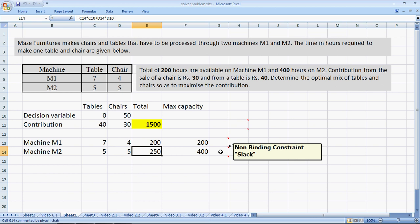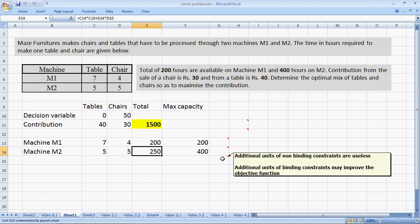Now, if additional capacity of machine M2 was available in the market, it does not make sense for the company to go out and buy this extra capacity because as it is, there is some extra capacity available with the firm. But if additional capacity of machine M1 were to be available, it might make sense for the firm to go out and buy because it's a binding constraint and if we increase this, it might increase the objective function. So what are we saying here is that the additional units of non-binding constraints are practically useless, but additional units of binding constraints may improve the objective function.